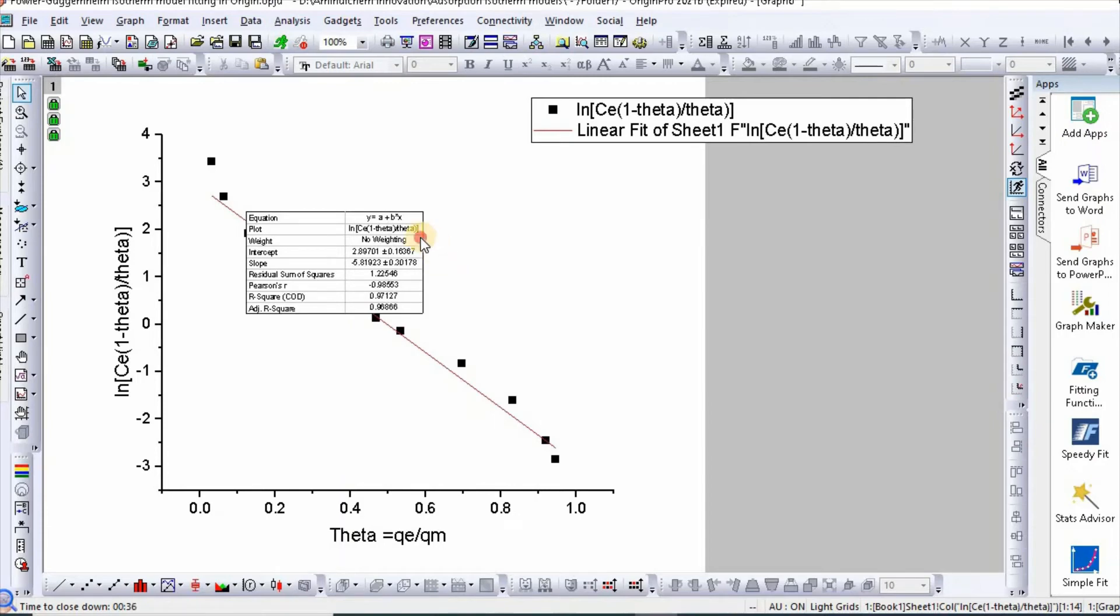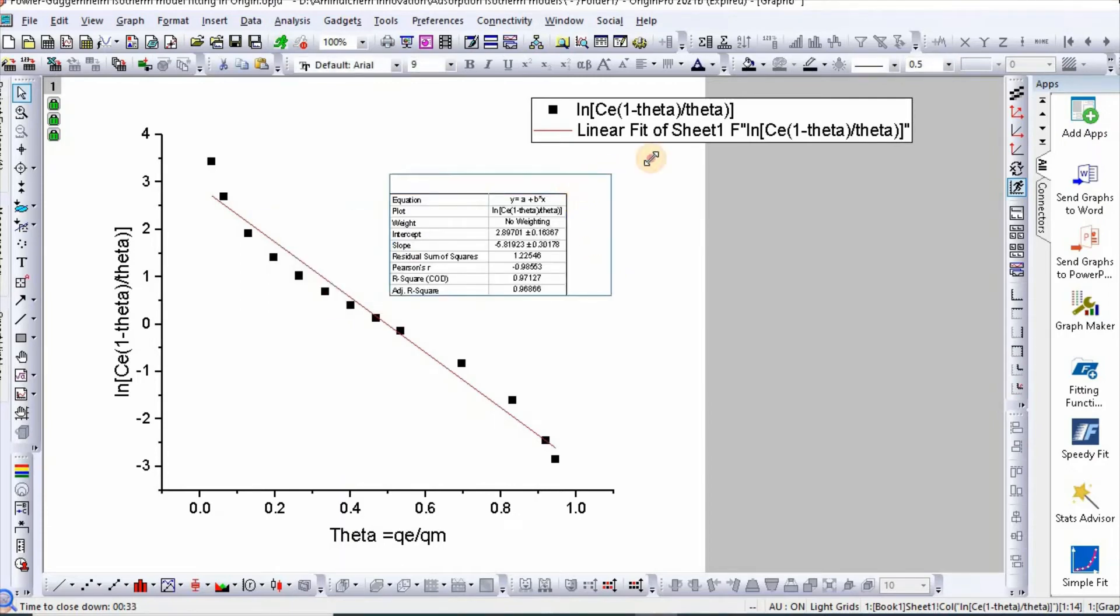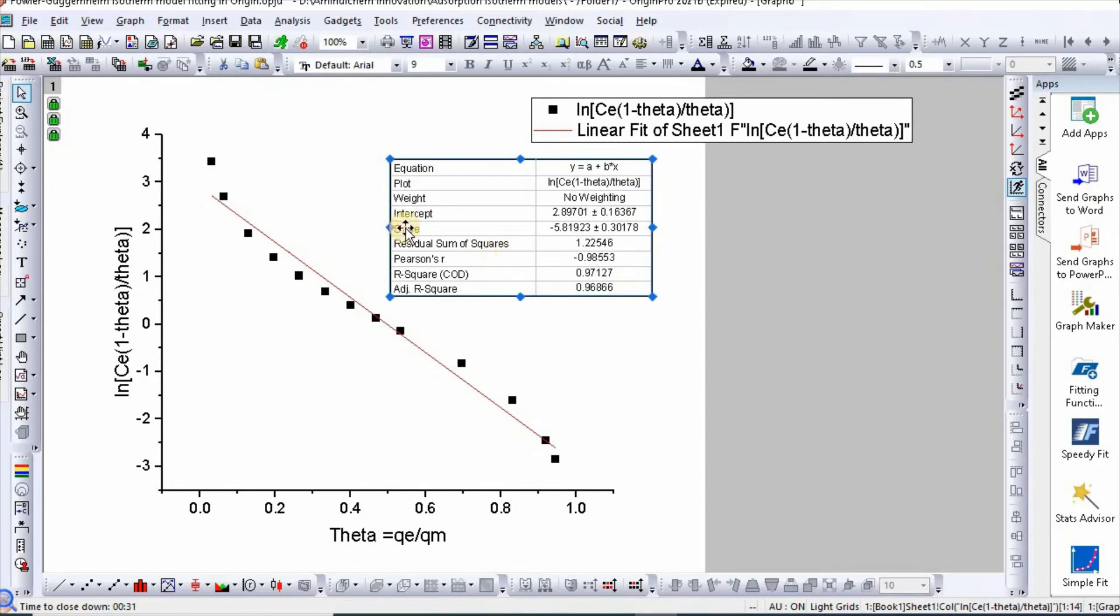Then OK. So here is your intercept equal to 2.897 and slope minus 5.819. So after some modification you can easily make it publication quality, and putting the values of intercept you can easily calculate K values, and putting values of slope you can easily calculate w values.